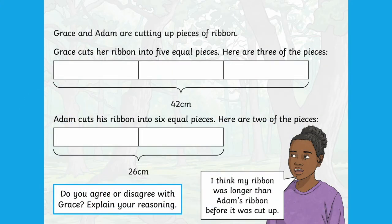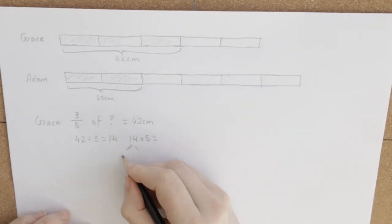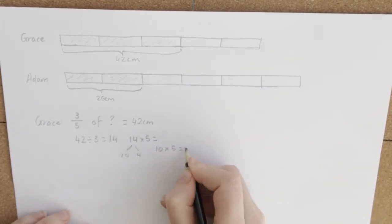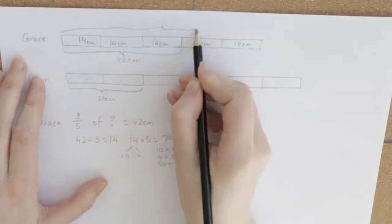This lesson series has been designed to help your year six pupils better understand fractions of an amount. Perfect for any pre-learning, intervention or home learning. And then I partitioned 14 into 10 and 4 and timesed it by 5, which gave me 70 centimetres. So Grace's whole ribbon equaled 70 centimetres.